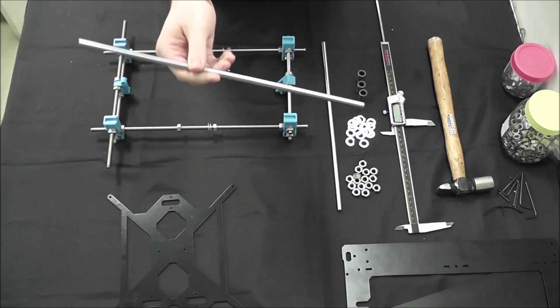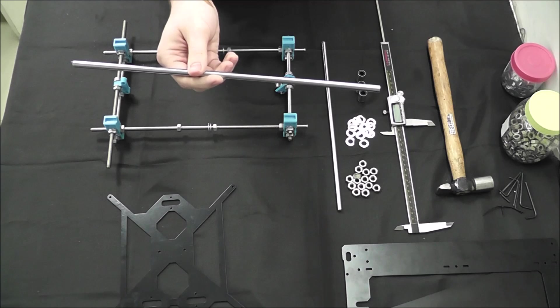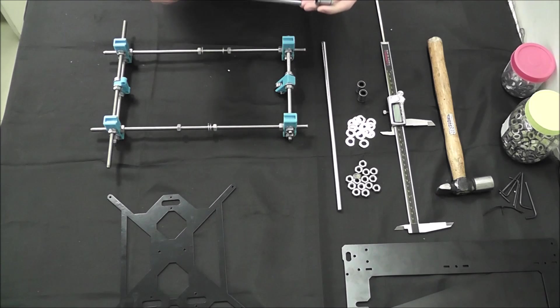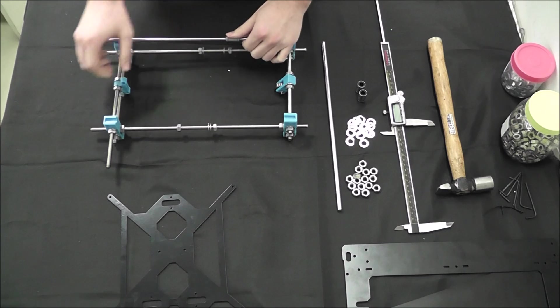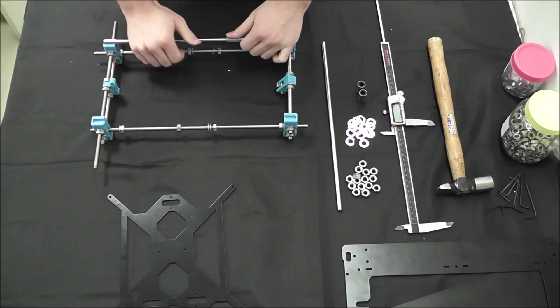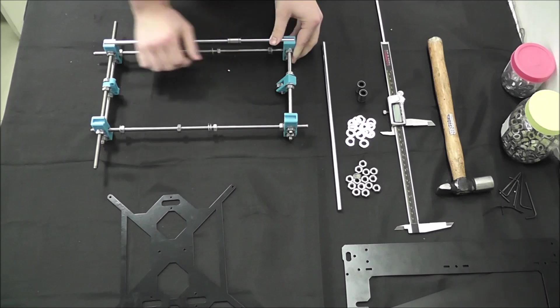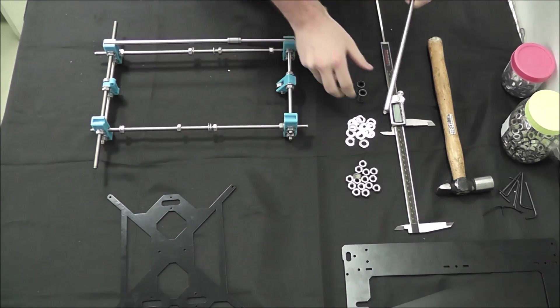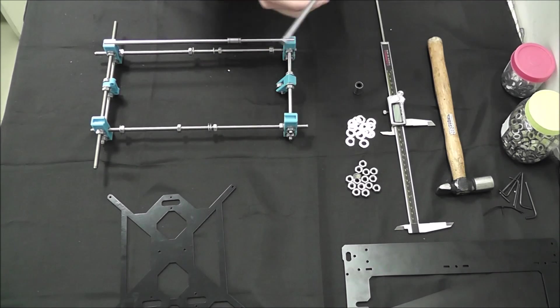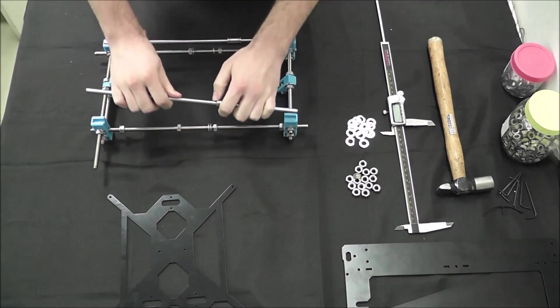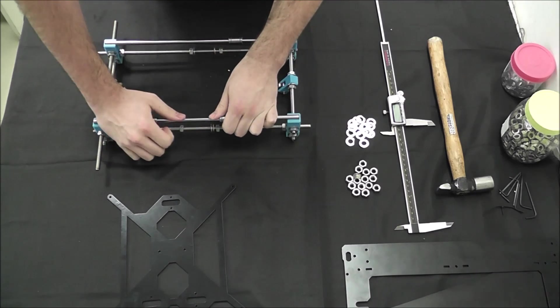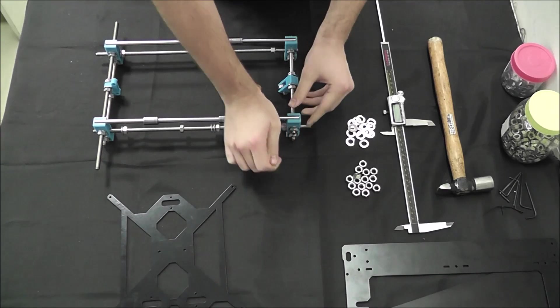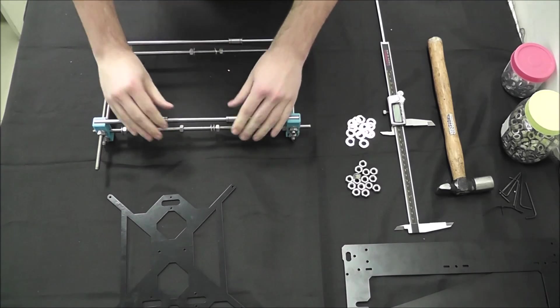So here we have our smooth rods that the linear bearings are going to glide on. We're going to put one on one side and then push it in here and then two on the other side and push it in here. You can hear that snap, it's really tight in there.